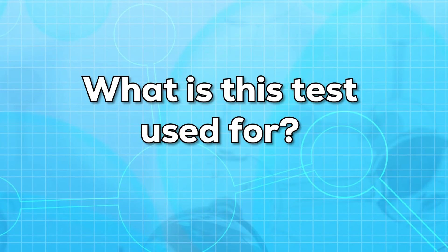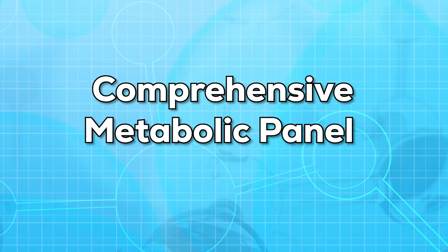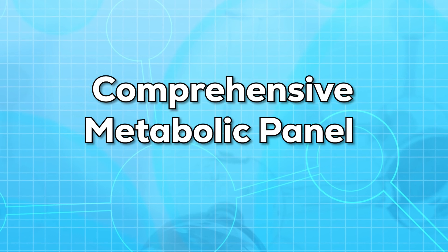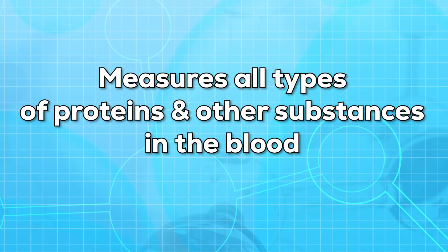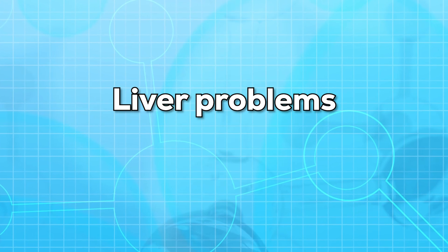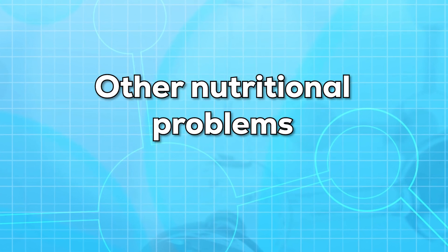Now let us see what this test is used for. Most of the time, this test is not done alone and is a part of a comprehensive metabolic panel. A comprehensive metabolic panel is a group of tests that measures all types of proteins and other substances in the blood. It may also be used to diagnose kidney problems, liver problems, and other nutritional problems.